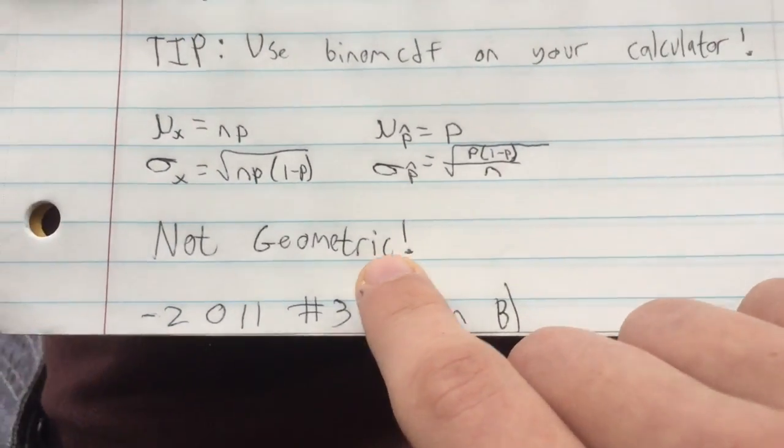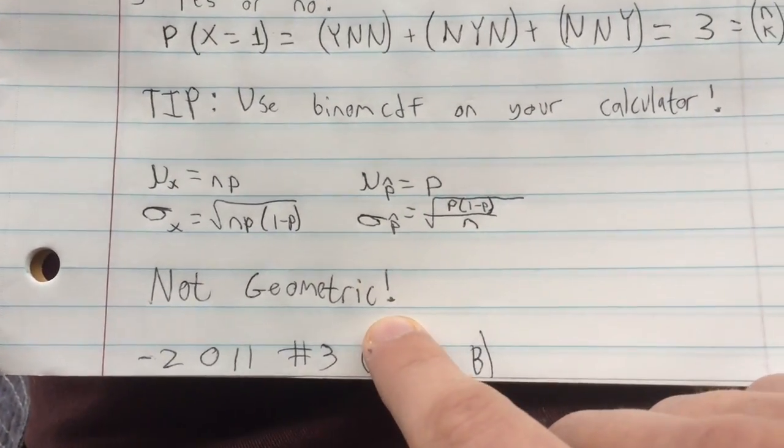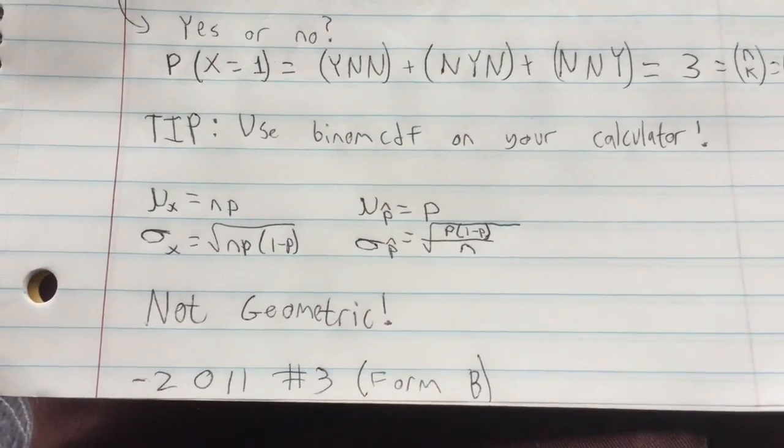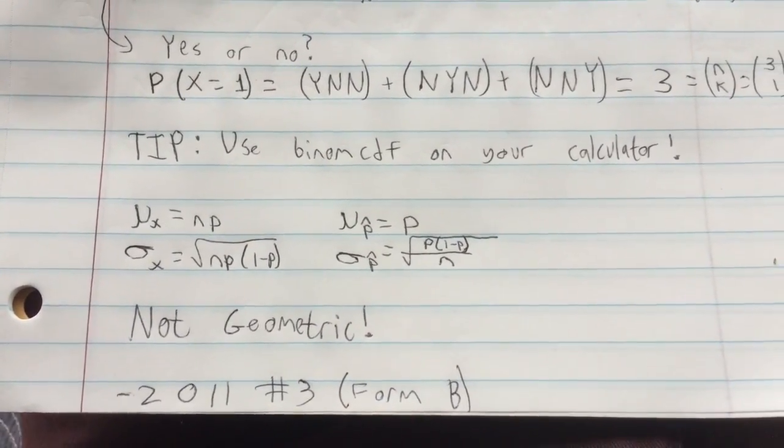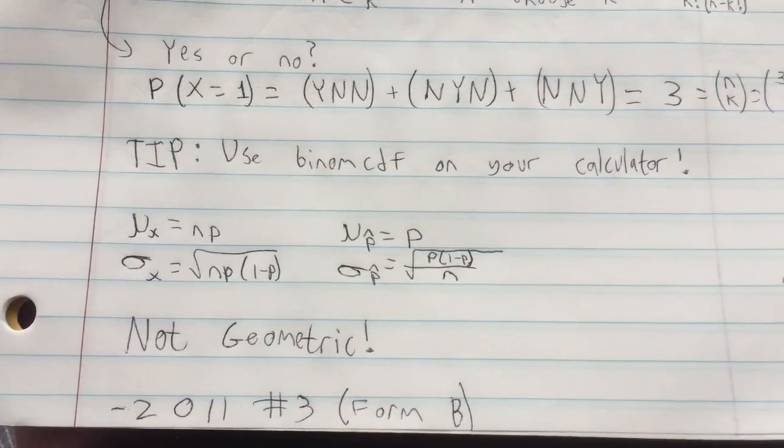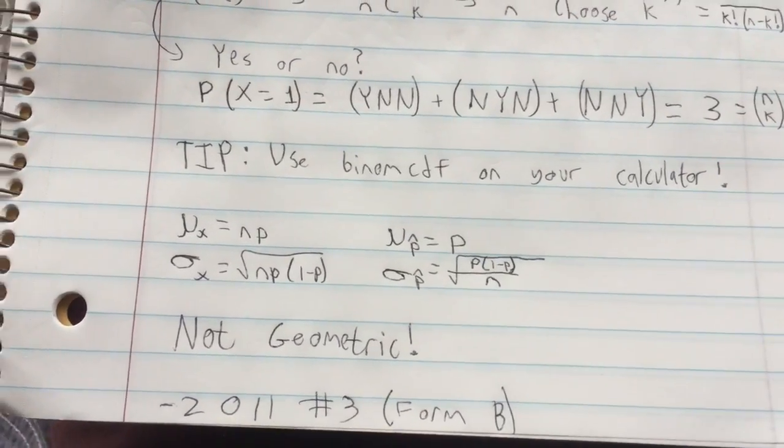Now remember, this is not a geometric distribution. Geometric distribution is something entirely different. It's the probability of success, how many trials are you going to need to do to get a success once, which is not what this is at all.